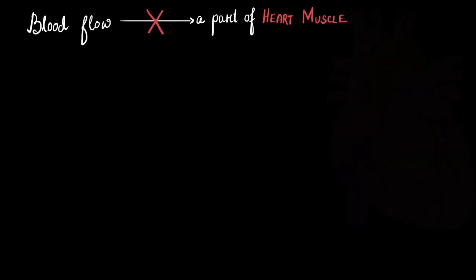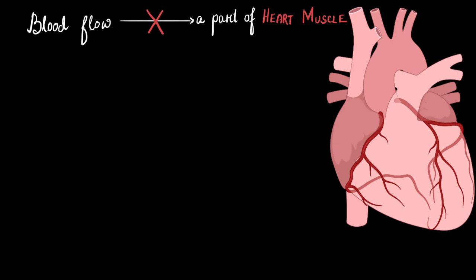So we call it a heart attack when the blood flow to a part of the heart muscle is blocked. And who supplies blood to the heart muscle? The coronary arteries, right? So any blockage in them could cause a heart attack. But how? Is it the sad news that caused a block?